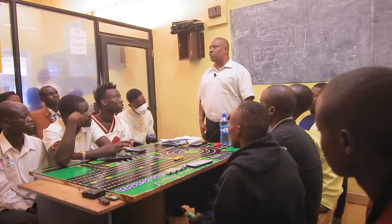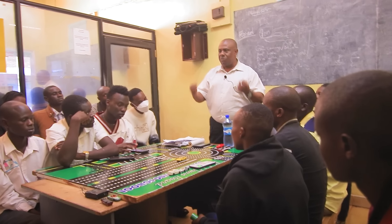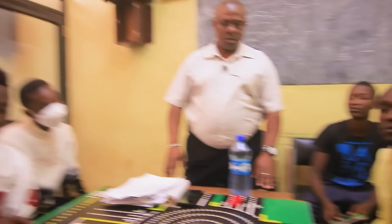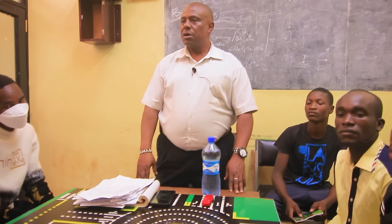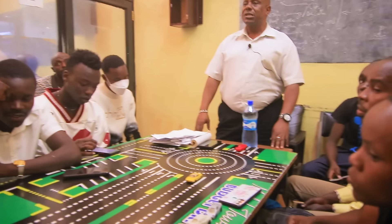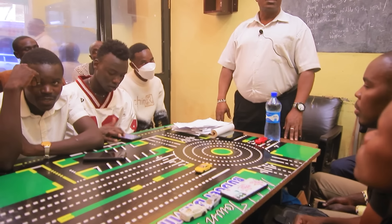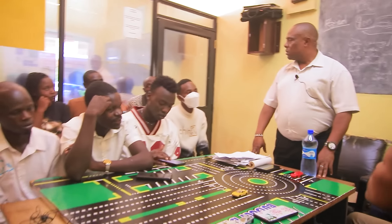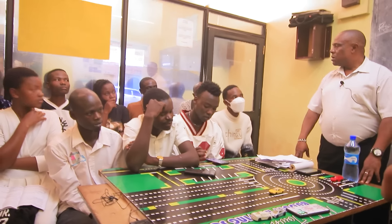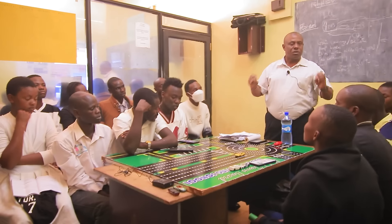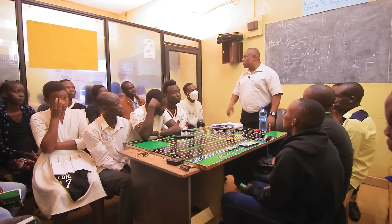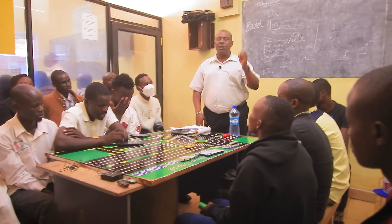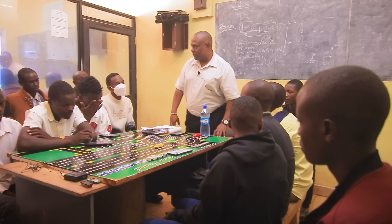Let us talk about the model town board. The rules of a model town board: use the shortest route, most correct route, without using parking route. Use the longest route, most correct route, without using parking route. Use the parking route as the only option.